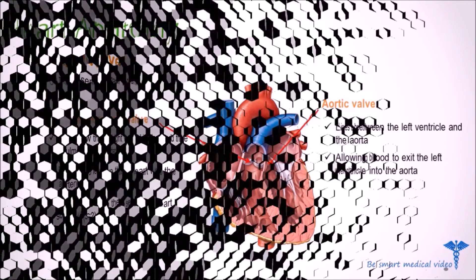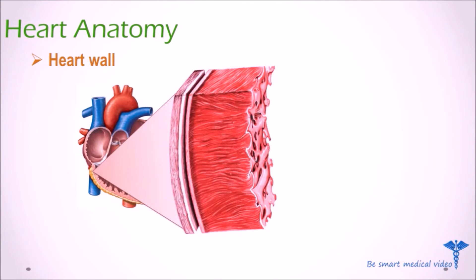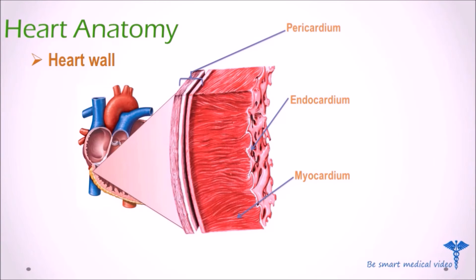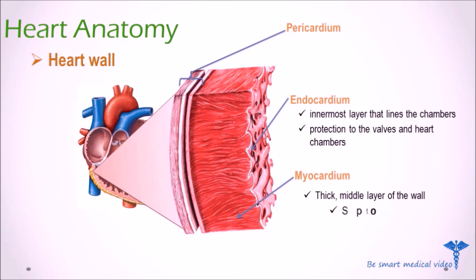Now we will discuss about the structure of the heart wall. Histologically, the wall of the heart consists of three layers: the endocardium is the inner layer, the myocardium is the middle layer, and the pericardium is the external layer. The endocardium is the innermost layer that lines the chambers of the heart and provides protection to the valves and heart chambers. The myocardium is the thick middle layer of the heart wall, composed of spontaneously contracting cardiac muscle fibers, and is the functional tissue of the heart.